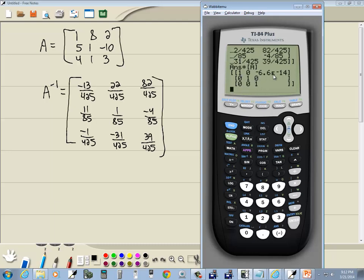Diagonal 1, 0, 0, 0. But we do have some rounding issues here. But that's negative 6.6 times 10 to the negative 14, which is 0. But sometimes you see that when you make up numbers like I do.